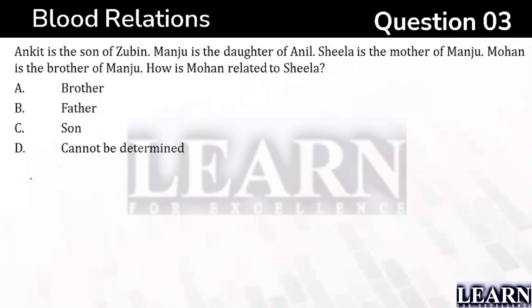You need to look at one point, that is nothing but the connection. You have to try to find out the connection first. Ankit is the son of Zubin, but check out whether Ankit and Zubin appear elsewhere — they don't.